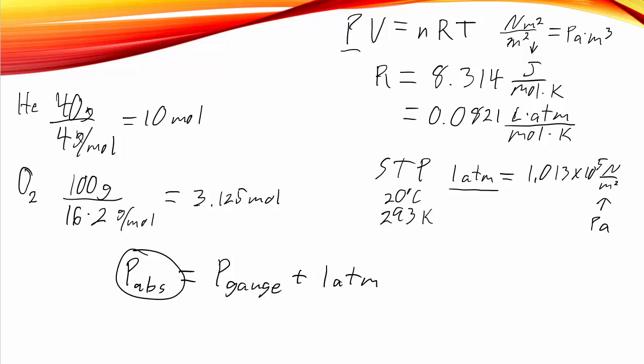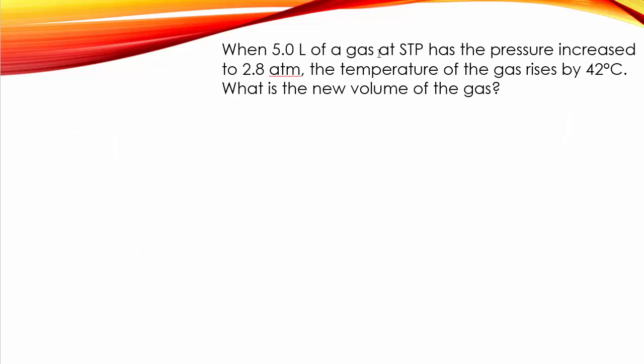We want to plug in absolute pressures whenever we're using PV equals nRT. So let's go ahead and jump into a problem here. You've got five liters of a gas at STP, so that's standard temperature and pressure.